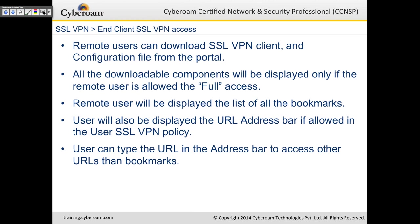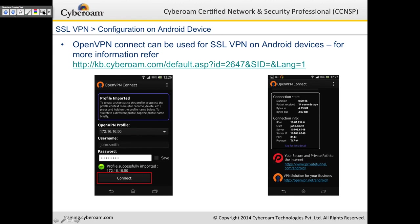For end client SSL VPN access, remote users can download the SSL VPN client and configuration file directly from the SSL VPN portal after logging in. All downloadable components are displayed only if the remote user has full access. The user is shown a list of bookmarks and optionally an address bar if allowed by the SSL VPN policy, enabling them to type other URLs beyond bookmarks. SSL VPN can also be configured on Android using OpenVPN — import the profile and configure OpenVPN on the Android device.